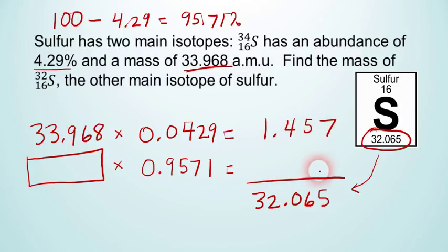And to get this value right here, I just need to subtract. So when I subtract 32.065 minus 1.457, I get 30.608. And now, to solve for the value in this box over here, I just take 30.608 divided by 0.9571, and the quotient I get here is 31.980 atomic mass units. So that is the mass of sulfur-32, the other main isotope of sulfur. That's the answer.